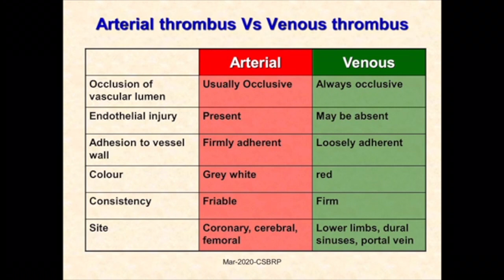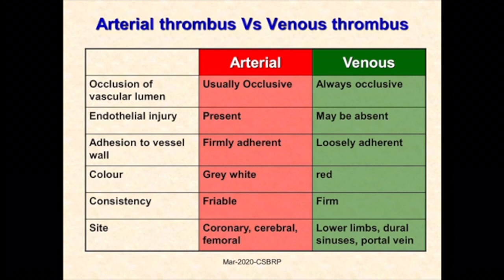This table enumerates the differences between arterial and venous thrombi. Arterial thrombi are gray-white in color and friable in consistency, and are usually occlusive. Venous thrombi are red in color, firm in consistency, and always occlude the vessel completely. Endothelial injury is a prerequisite for arterial thrombus formation but may not be present in venous thrombus formation. Arterial thrombi are usually found in coronary, cerebral, and femoral vessels; venous thrombi are most common in the lower limbs, with dural sinuses and portal vein as secondary sites.